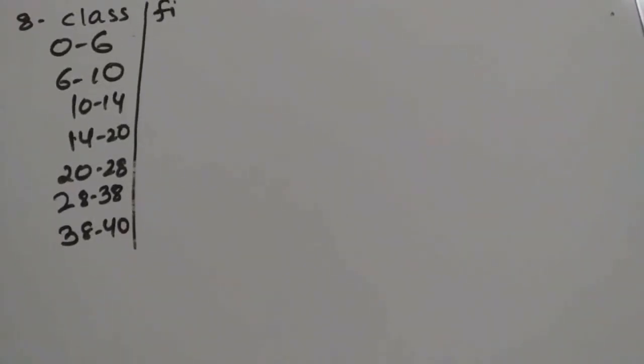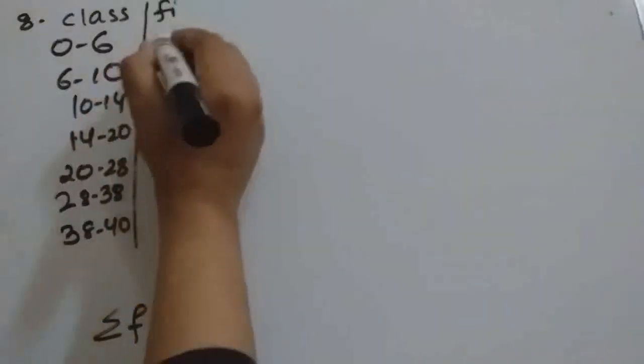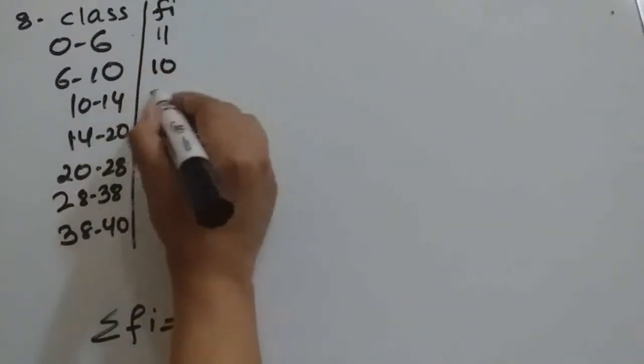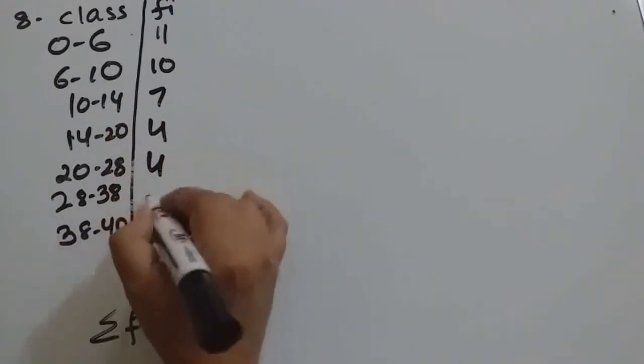In question number 8, it is given that the class teacher has the following absentee record of 40 students. So the total strength of the students is 40, that will be sigma fi. Find the mean number of days a student was absent. Now fi is given: 11, 10, 7, 4, 4, 3, 1.